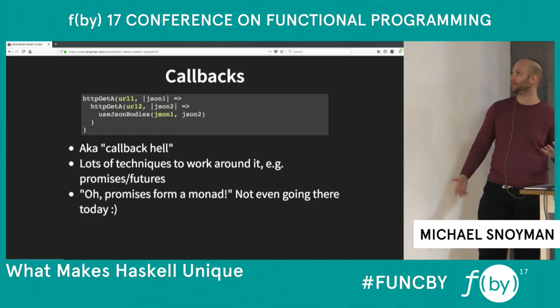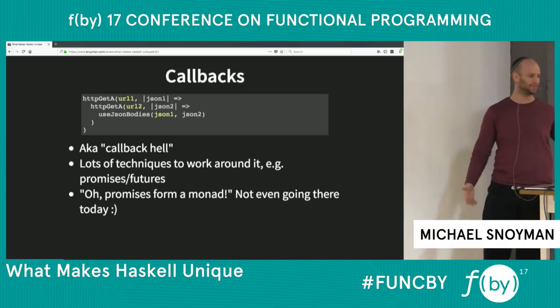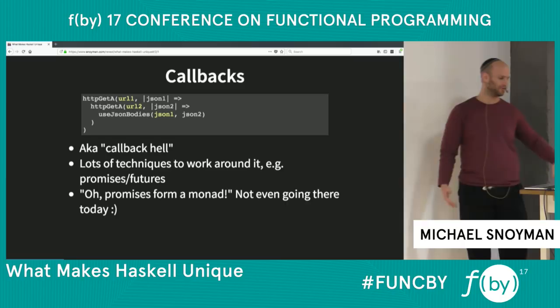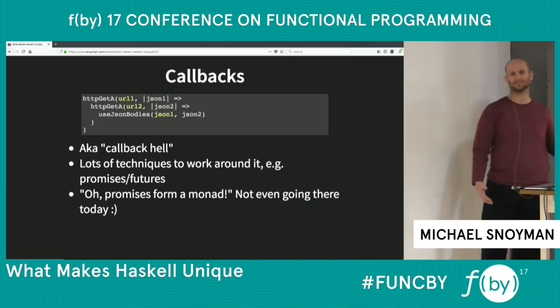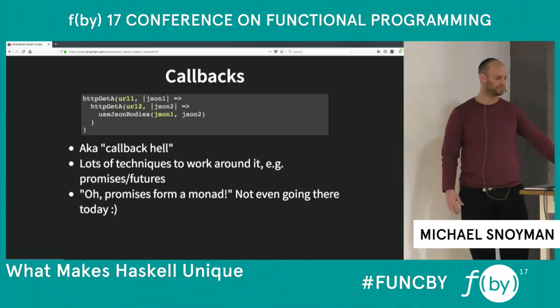A standard way to work around that is callbacks. Instead of making a blocking call, we make an async call. When the first HTTP request completes, we take that JSON body and pass it to a callback, then do the same thing again. This is callback style — also known as callback hell. Some people really dislike this. You do definitely need to restructure your programs to take advantage of this callback style.